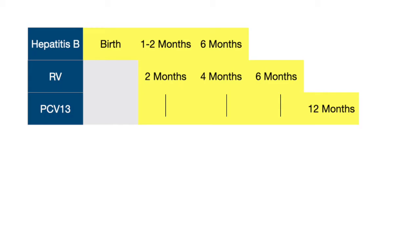Next up is PCV13, which is so named because it covers against 13 serotypes of Streptococcus pneumoniae. This can lead to pneumonia and meningitis among other infections, and it is also given at two, four, and six months, as well as at one year of age.